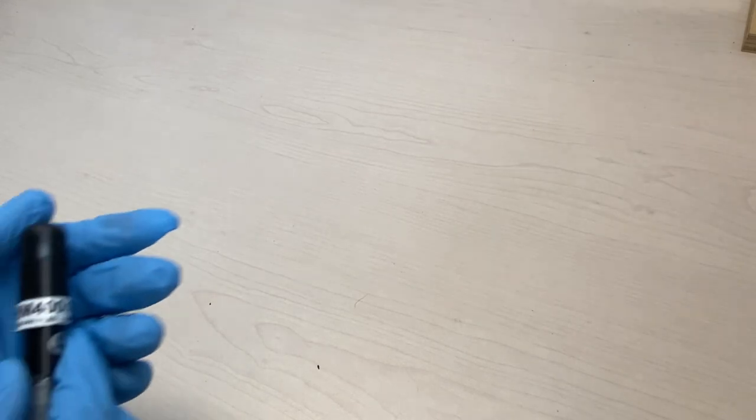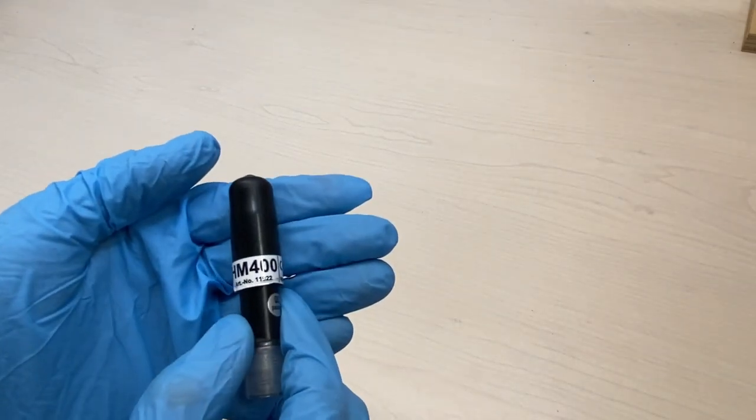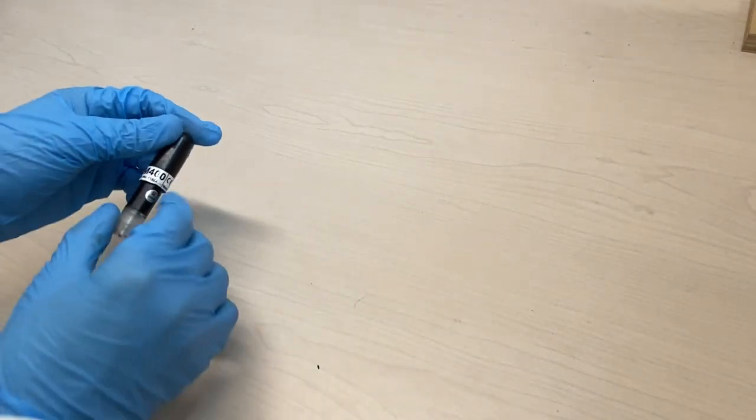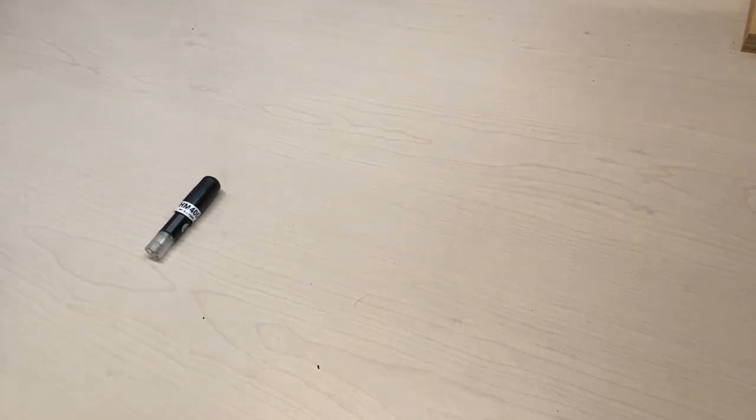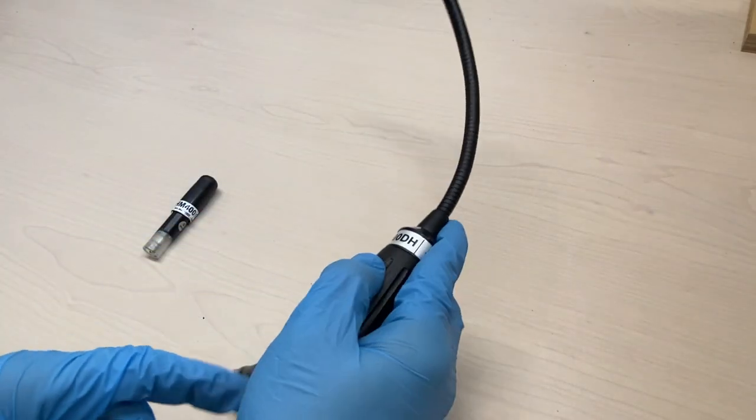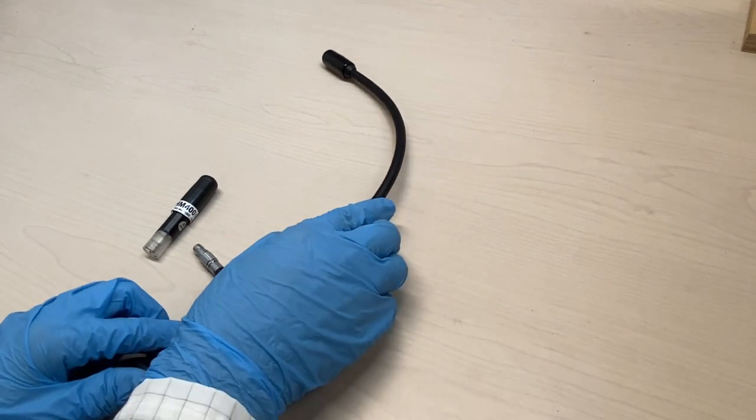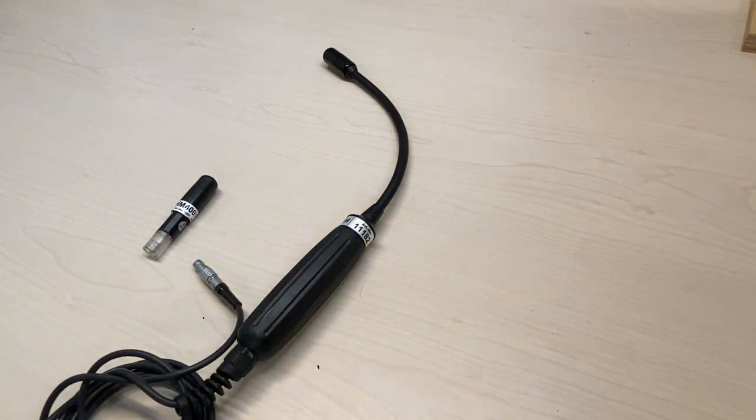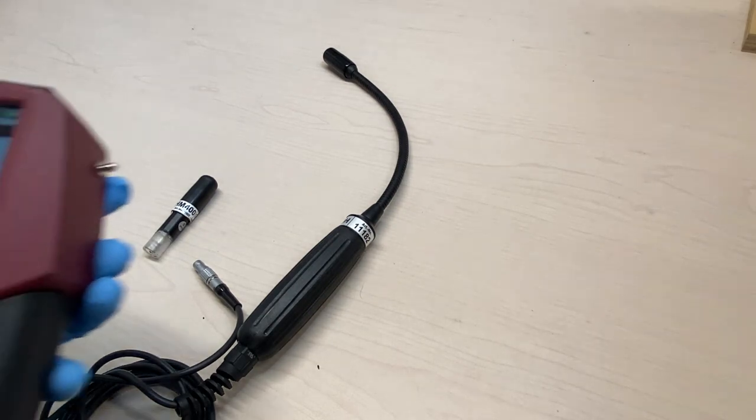Today we will explain how to use the indoor climate sensor HM400 with the Optima 7 or its newer version, the OptimaX, to determine relative humidity, temperature, dew point, and absolute pressure. After powering on the instrument, the main screen will be displayed in the window.